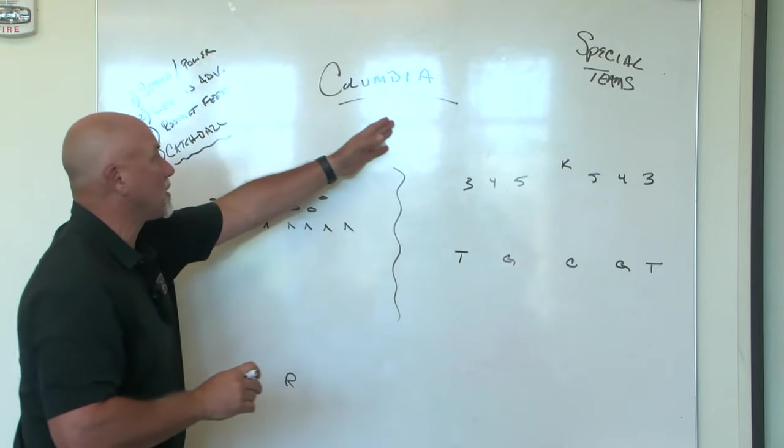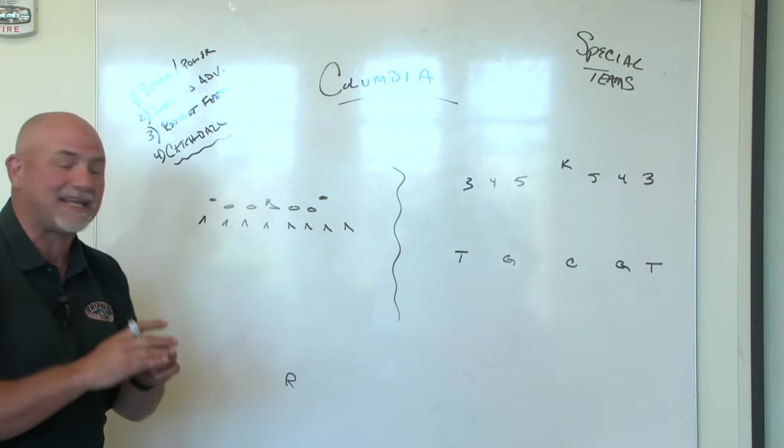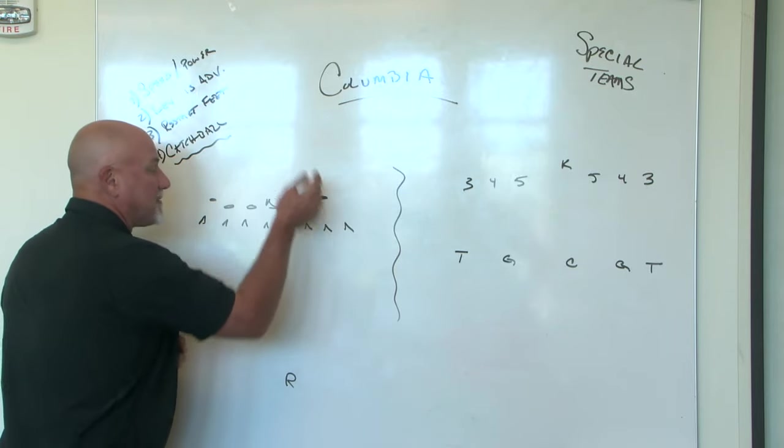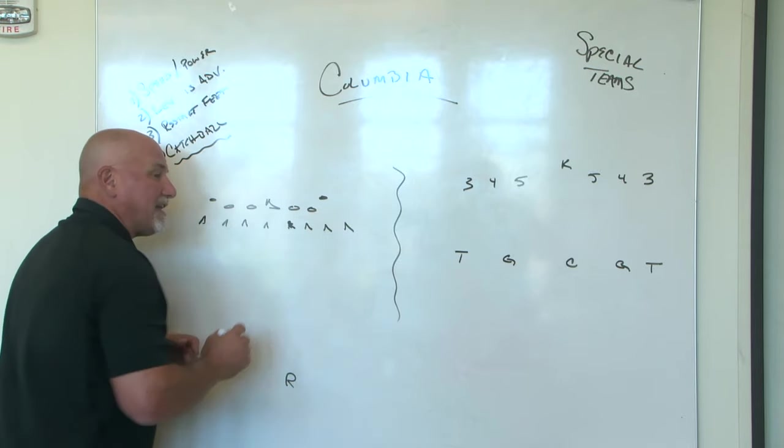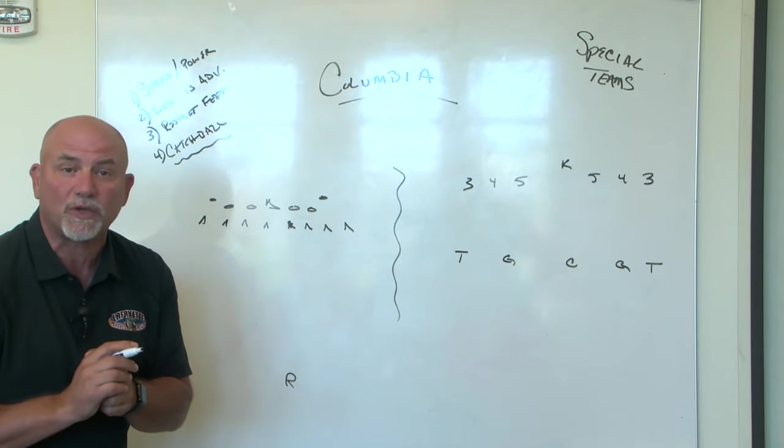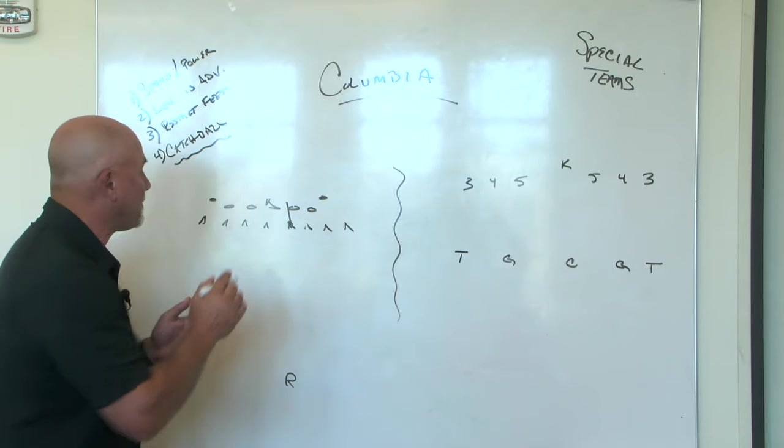We're going to talk about special teams. So if we're against Columbia, we need to convert speed into power. All of these guys up front on the punt return, the returners back here as well, we have to start in a speed position, whether it be a two-point stance or a three-point stance, and rush as if we're coming to block the punt.